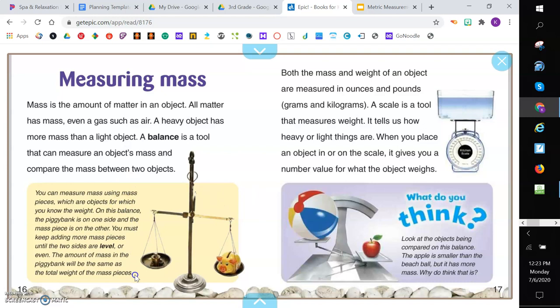Let's take a look at our caption. You can measure mass using mass pieces, which are objects for which you know the weight. On this balance, the piggy bank is on one side and the mass piece is on the other. You must keep adding more mass pieces until the two sides are level or even. The amount of mass in the piggy bank will be the same as the total weight of the mass pieces.